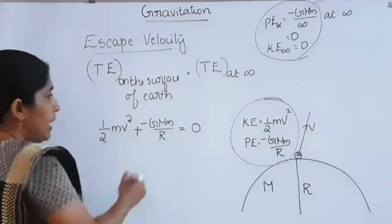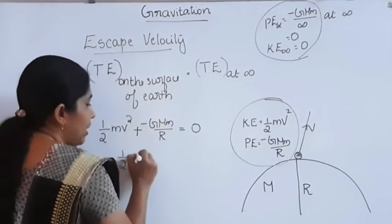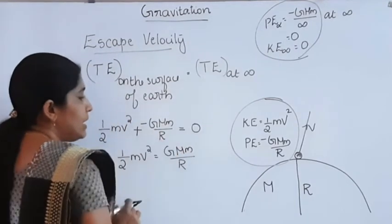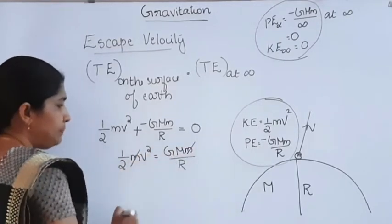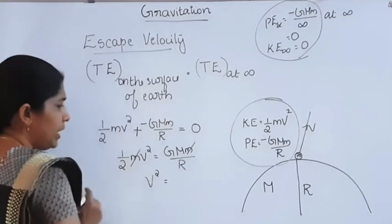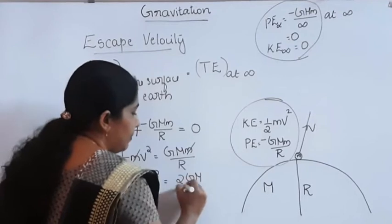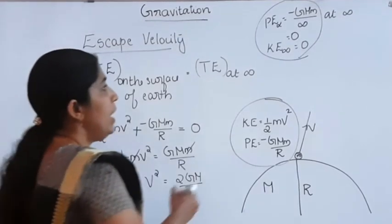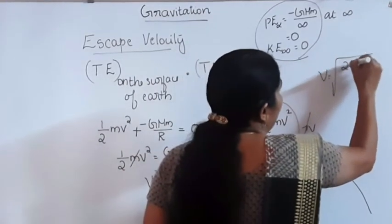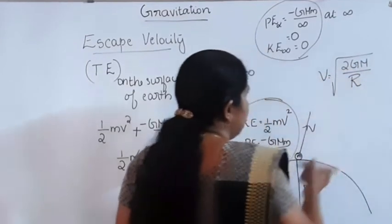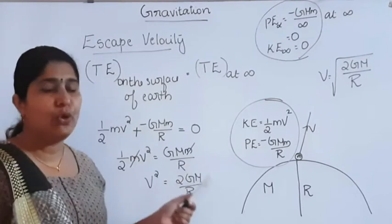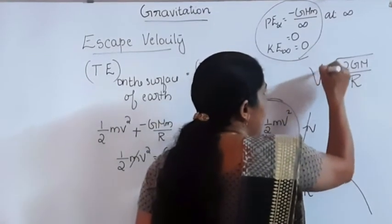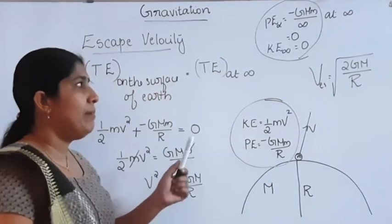According to conservation of energy, total energy on the surface of the Earth equals total energy at infinity. So: half mv squared minus GMm over R equals zero. Rearranging, half mv squared equals GMm over R. Canceling small m, we get v squared equals 2GM over R. Therefore, escape velocity v equals root of 2GM divided by R.